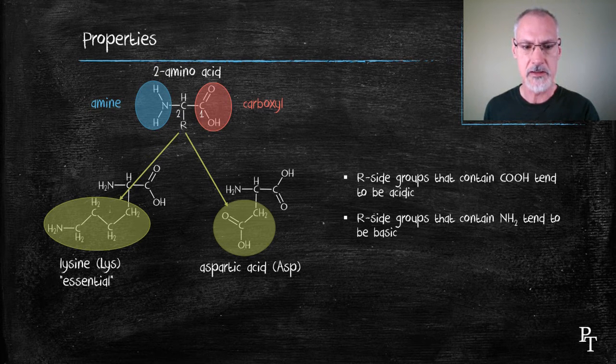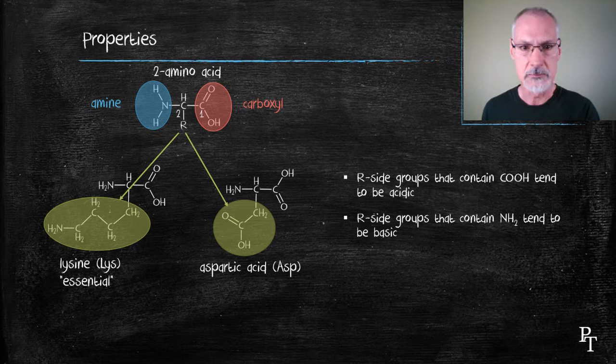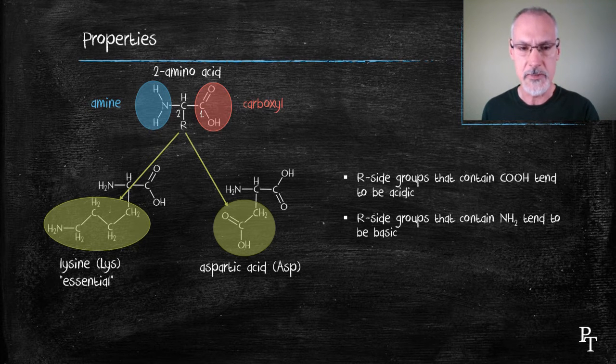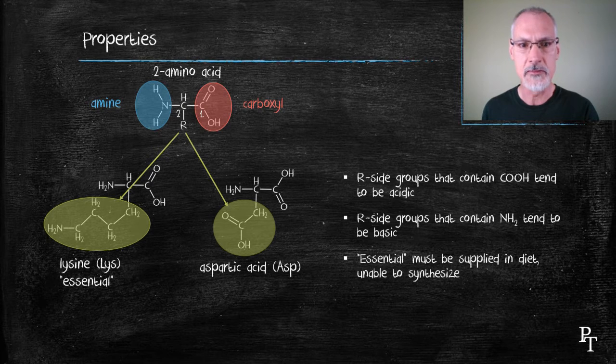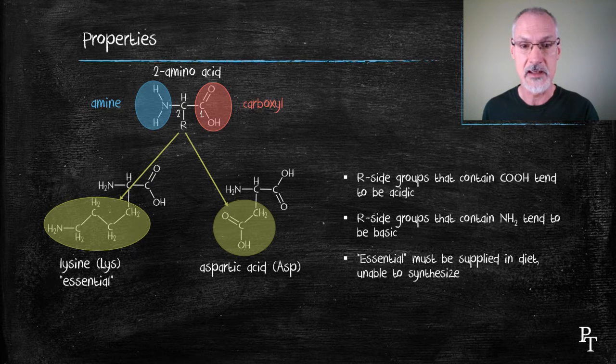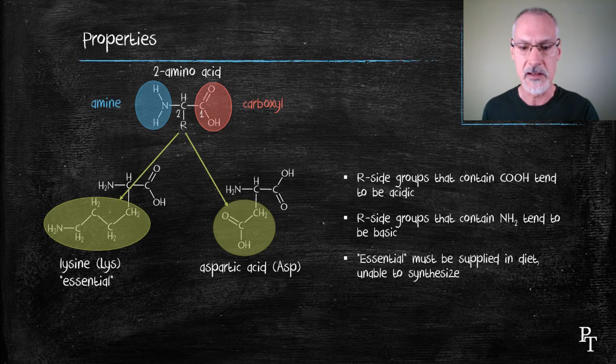An interesting point I should mention here is lysine, the amino acid I've shown here on the left, is considered an essential amino acid, meaning we're only capable of getting that amino acid from our diet, and particularly diets that contain cheeses contain lots of lysine.